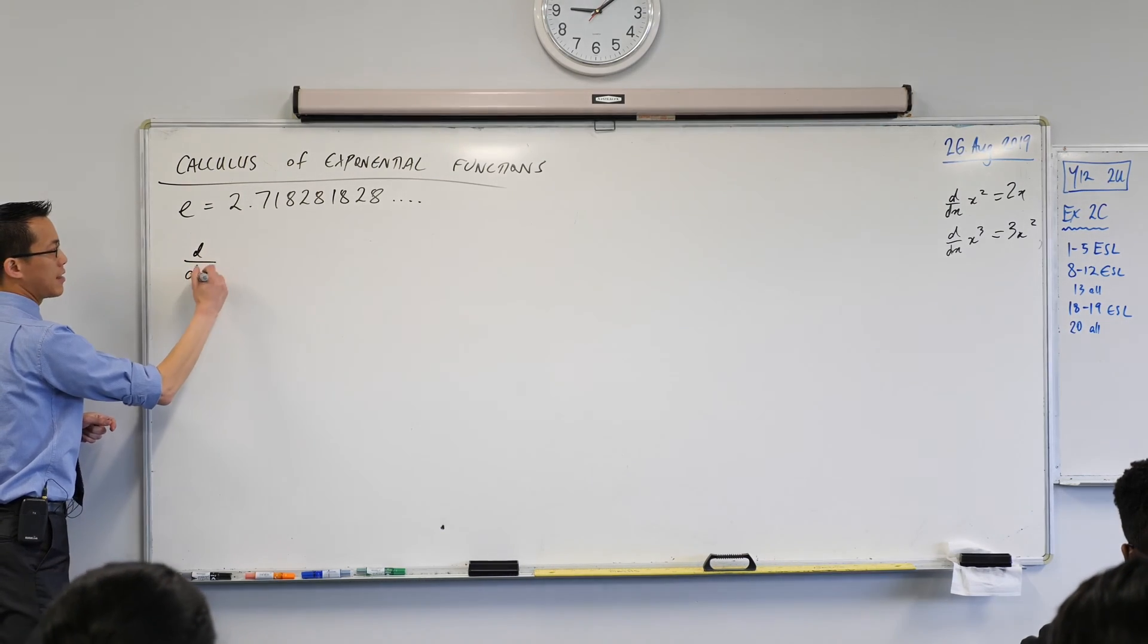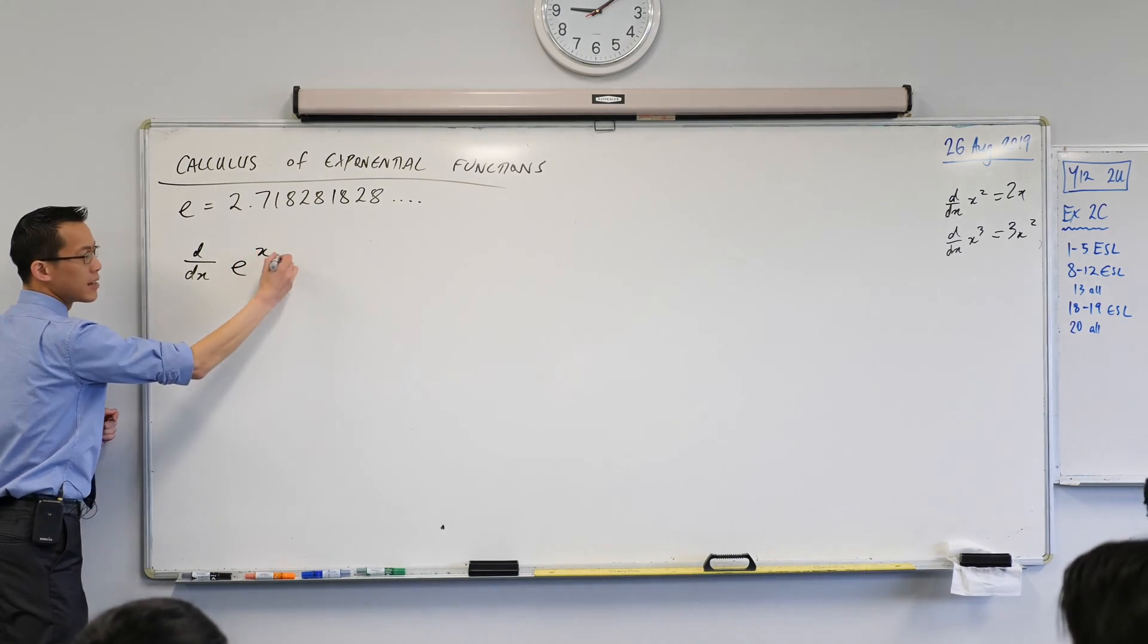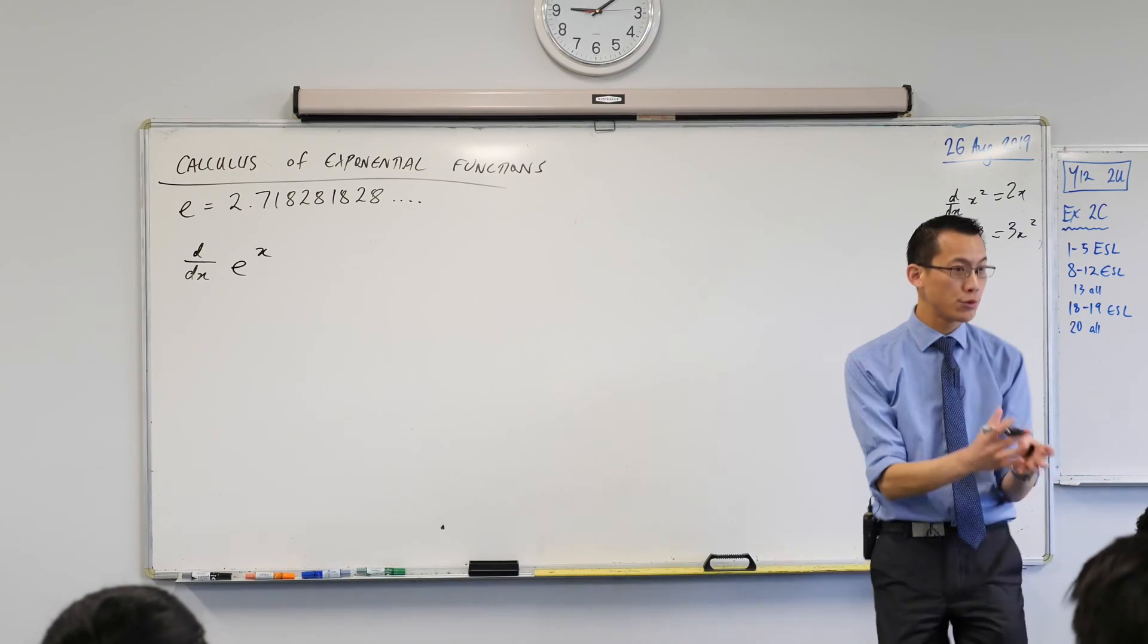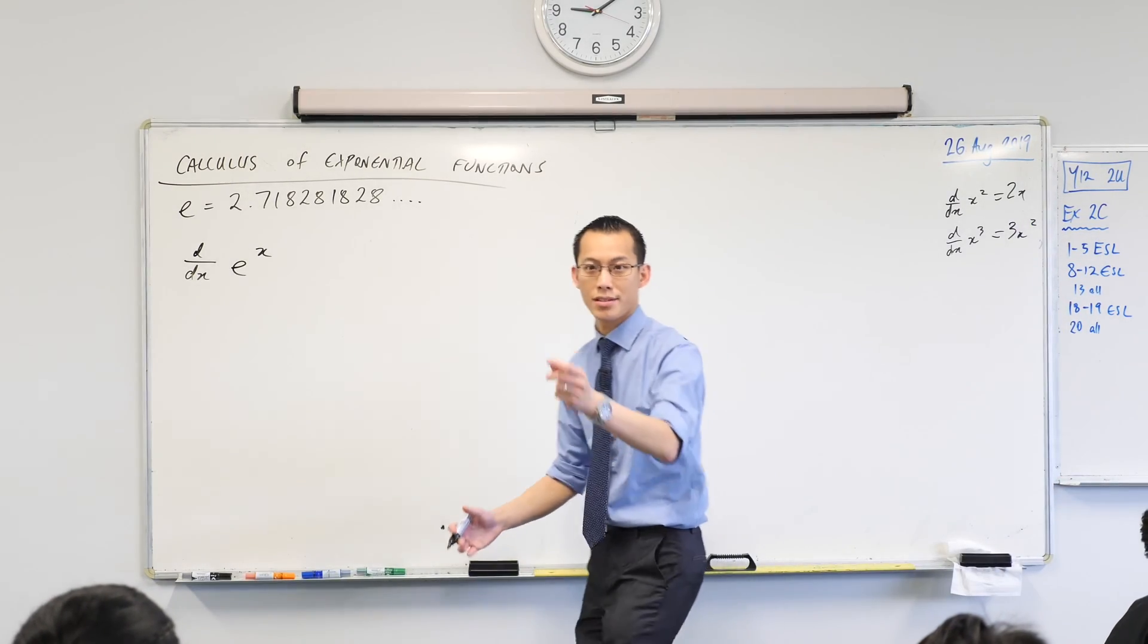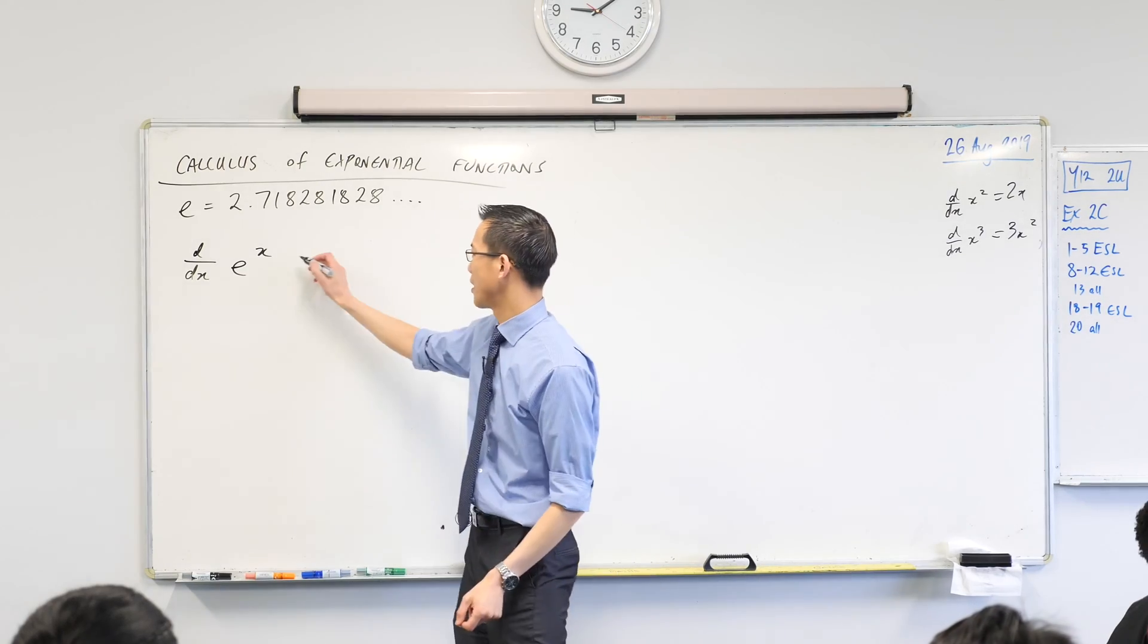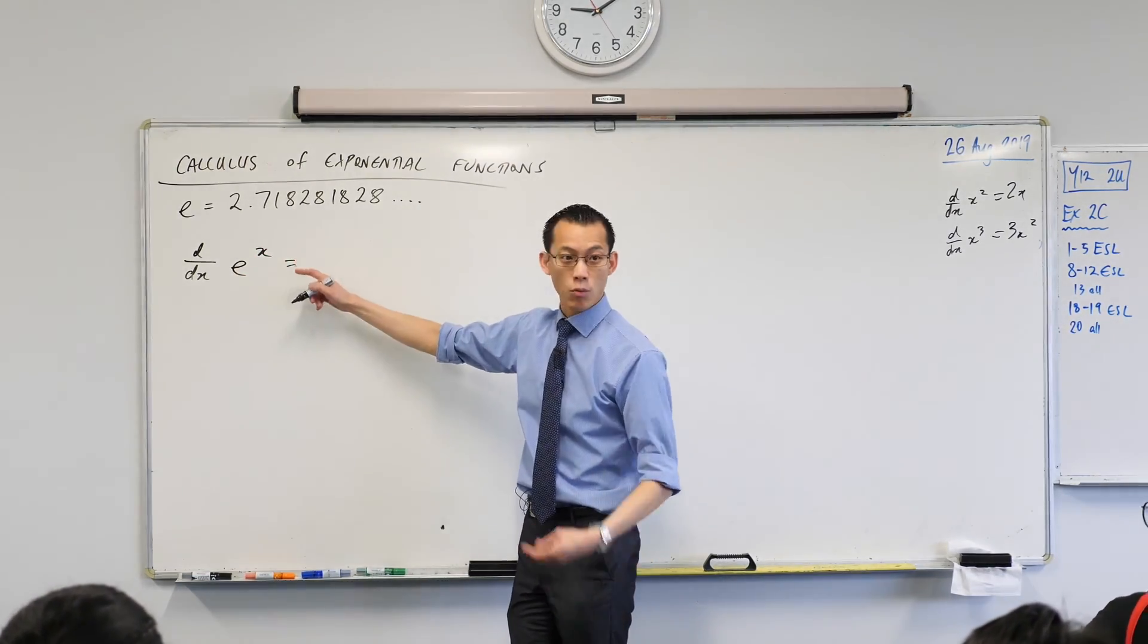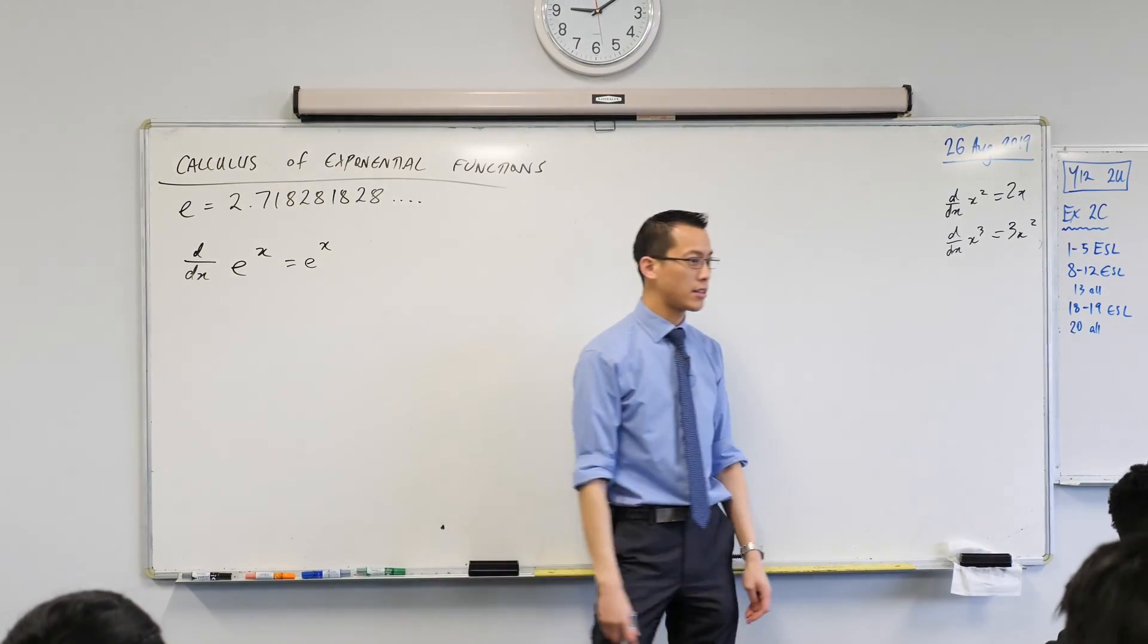Namely, when we tried to take this, not 2 to the power of x, not 3 to the power of x, when you took E to the power of x, when we had a look at that derivative, that blue graph, what was it? It was exactly the same as the graph we started with. In other words, you take this E to the x business, when you differentiate it, what you get back is E to the power of x.